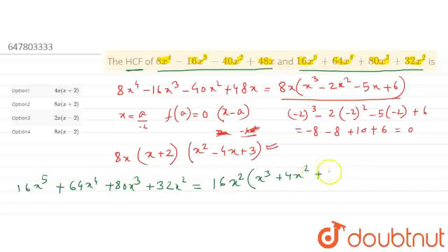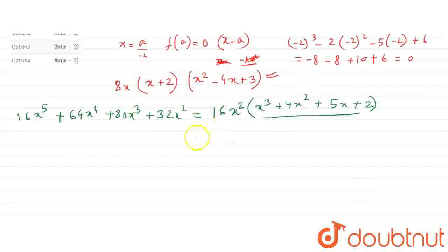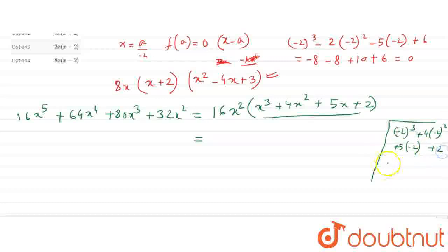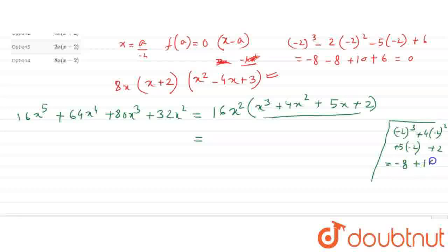We will use the same method. We can take out common factors and then apply the vanishing method. If we substitute x equals minus 2, we get: minus 2 cubed plus 4 times minus 2 squared plus 5 times minus 2 plus 2, which gives minus 8 plus 16 minus 10 plus 2, equals 0.